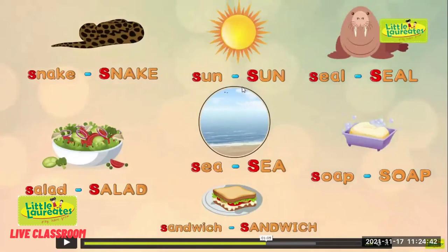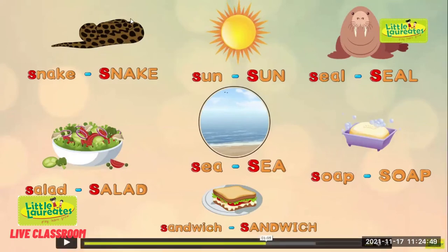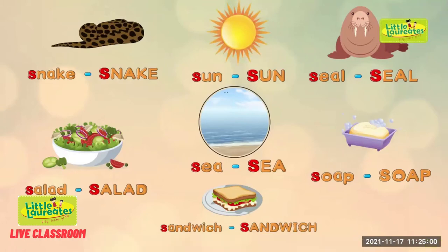S, sand, sea. Now everyone see this picture. S for snake. See outside the window, everyone — now what you can see? Sun. Because now it's morning and outside the window, what you can see? You can see in the sky — sun.